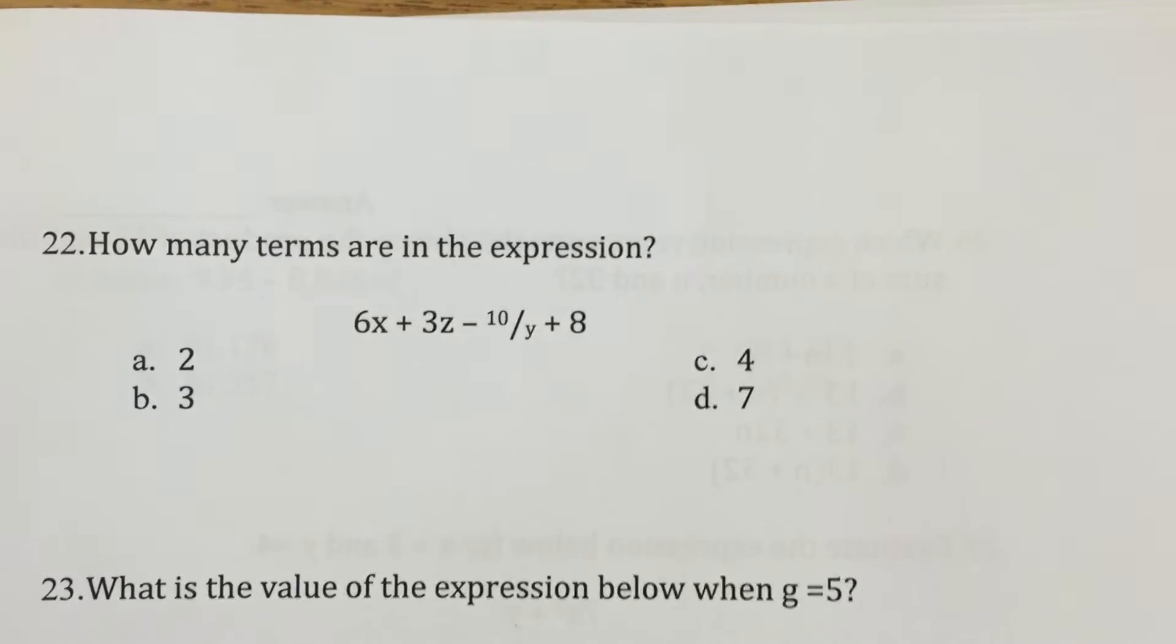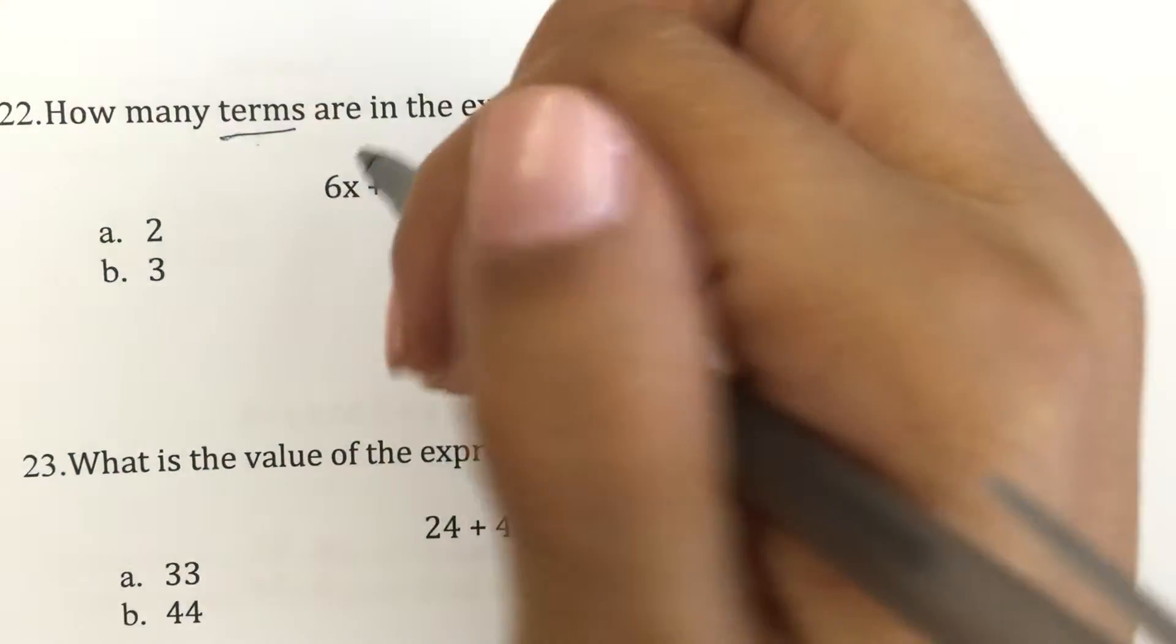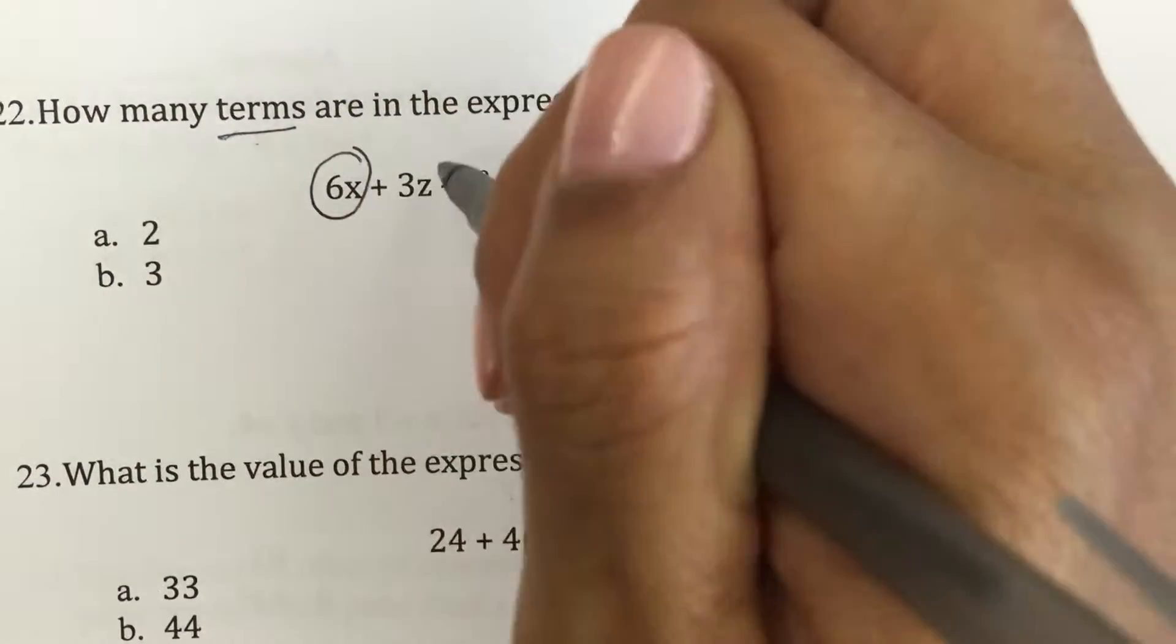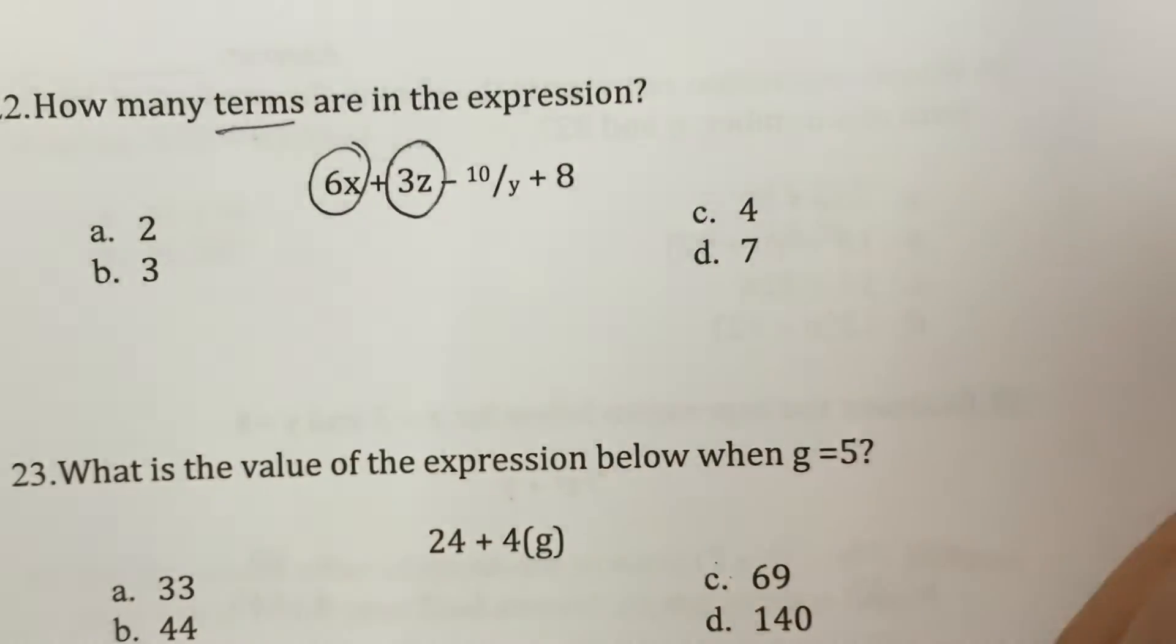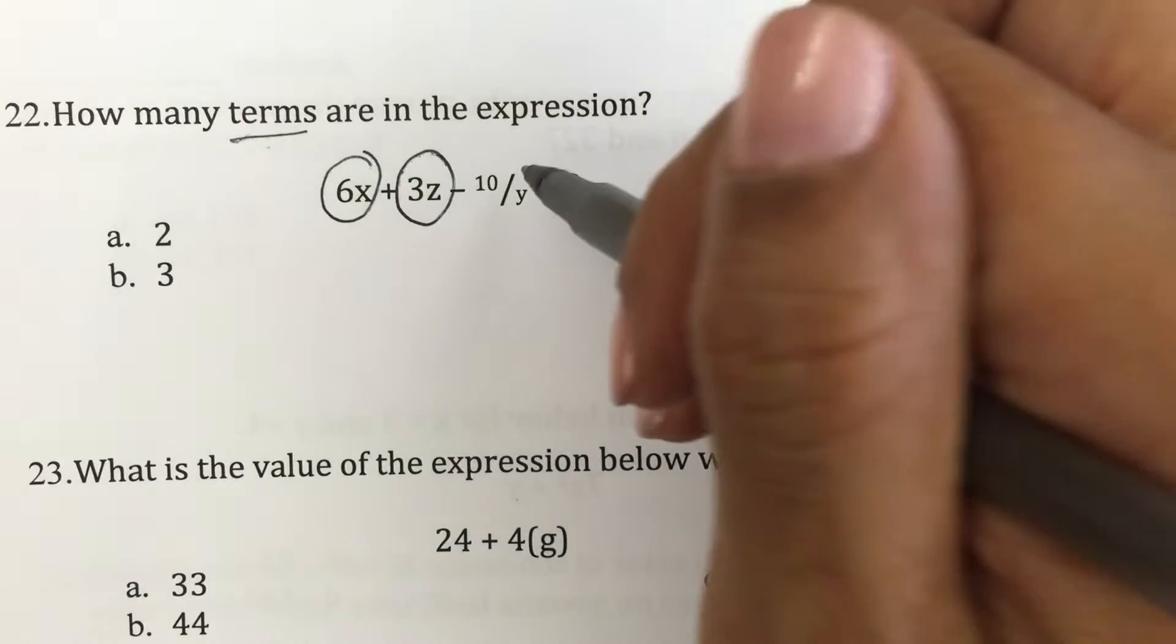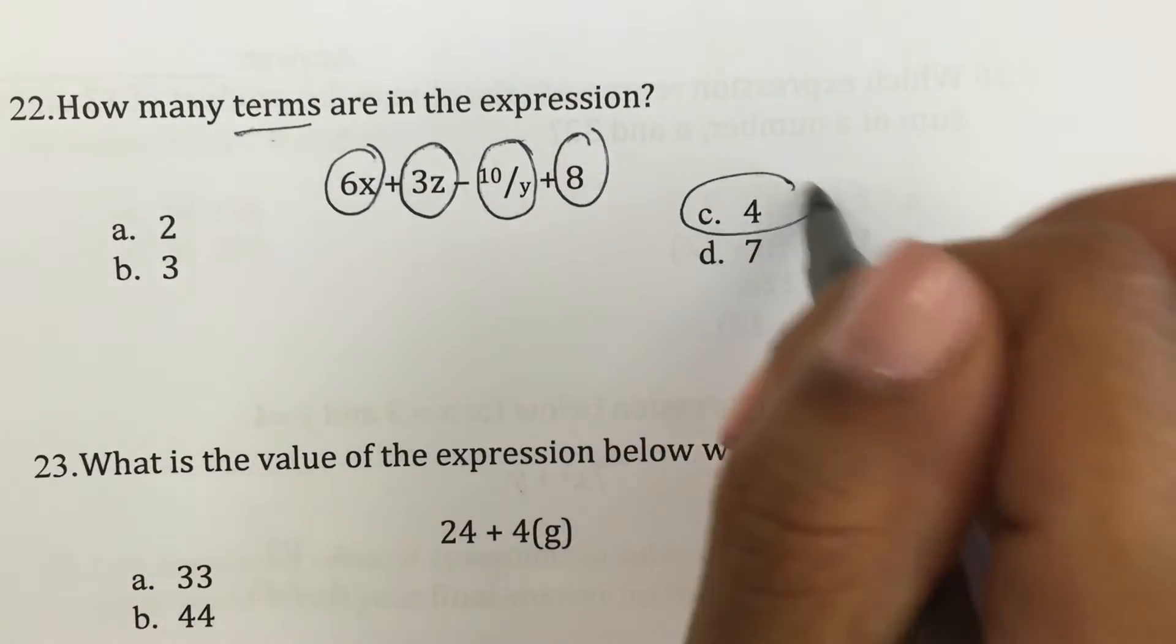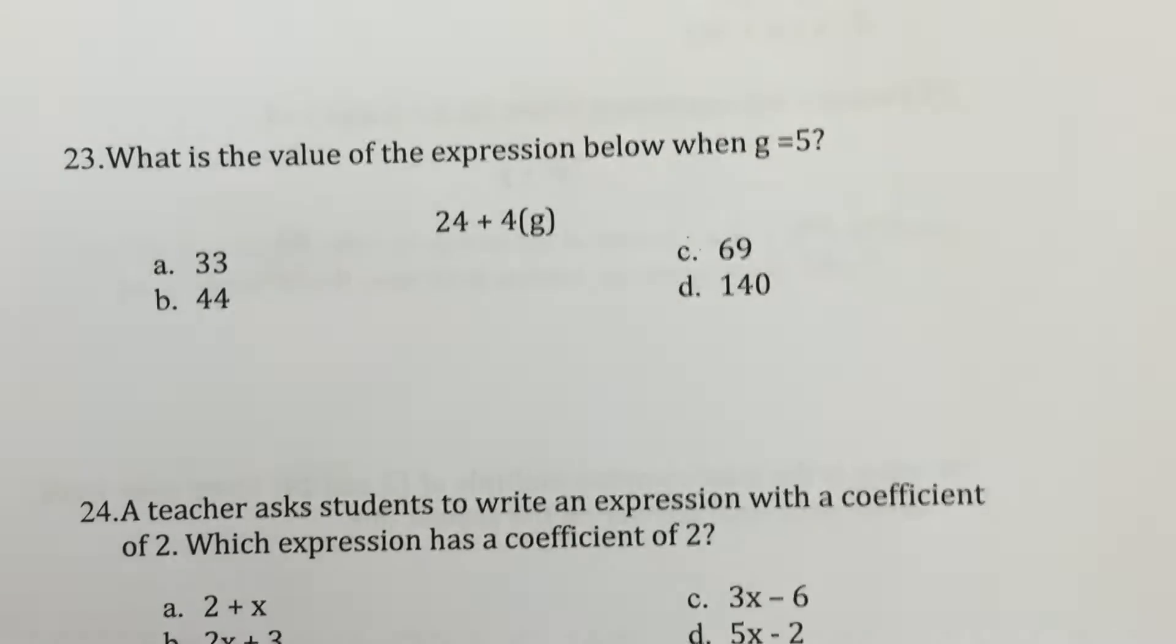This one, a lot of people ask me how many terms. And I didn't mean variables. I really meant terms. So this is a term. 6x is a term. 3z is a term. My exponent, my coefficient, and my variable. Here's a term. And here's another term. I have 4 terms to deal with. Okay.